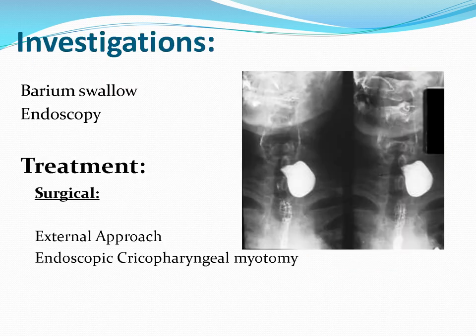The most important investigation for pharyngeal pouch is barium swallow, along with endoscopy. Treatment is surgical removal, which can be done through an external approach or through endoscopes.